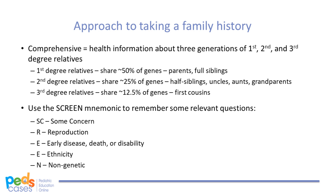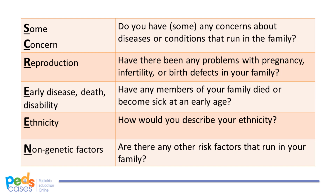The SCREEN mnemonic can help us remember relevant points to inquire about when gathering a family history. It stands for: Some Concern, Reproduction, Early disease/death/disability, Ethnicity, and Non-genetic factors. The questions this prompts us to ask are: SC — Do you have any concerns about diseases or conditions that run in the family? R — Have there been any problems with pregnancy, infertility, or birth defects in your family? E — Have any members of your family died or become sick at an early age? E — How would you describe your ethnicity? And N — Are there any other risk factors that run in your family?